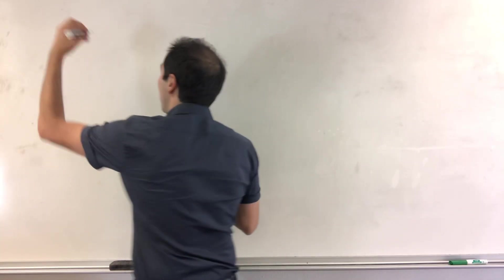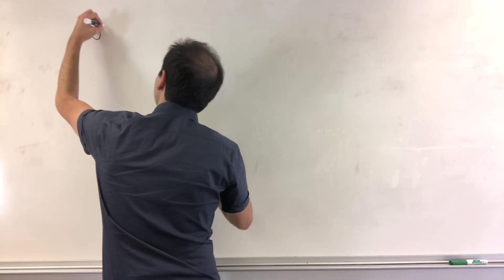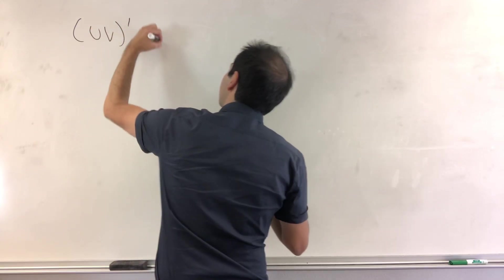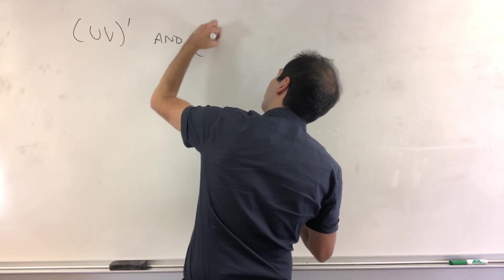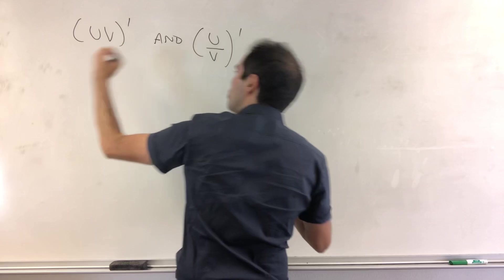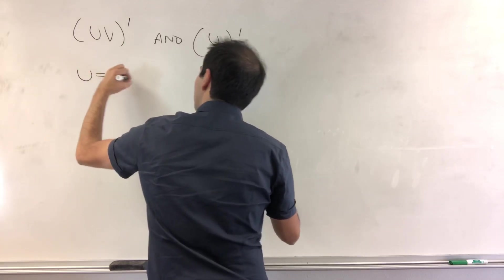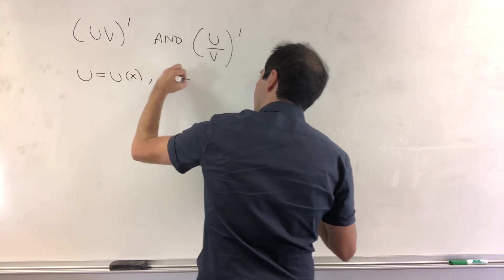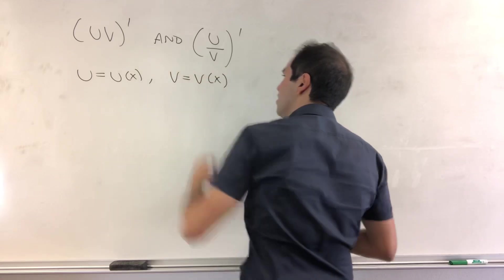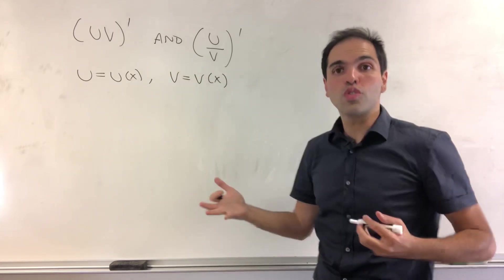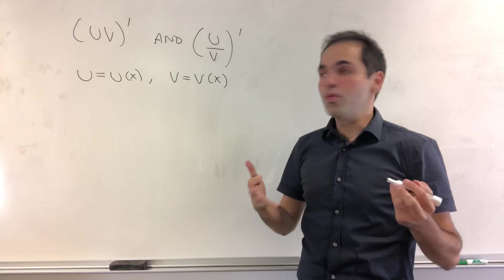All right, so what do we want to show? We want to find the derivative of uv and the derivative of u over v, where u is a function of x, and so is v. And again, the idea is just to use the Chain Rule, but to which function?